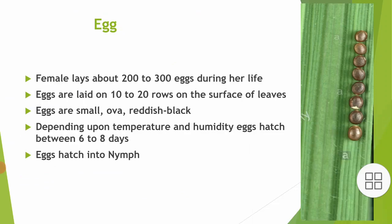Egg: The female lays about 200–300 eggs during her lifetime. Eggs are laid in 10–20 rows on the surface of leaves. Eggs are small, oval, and reddish or black in color. Depending upon temperature and humidity, eggs hatch between 6–8 days. Eggs hatch into nymphs.